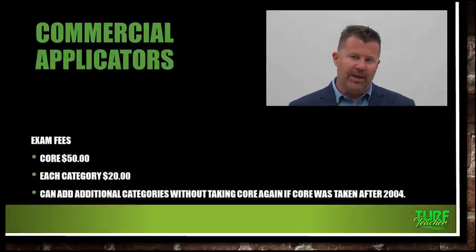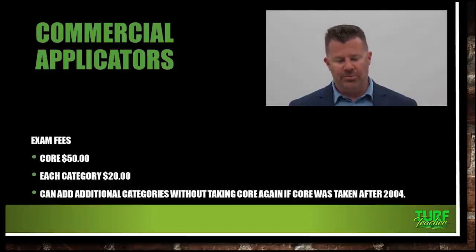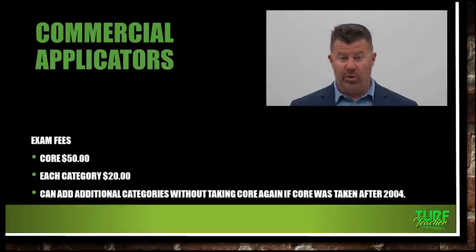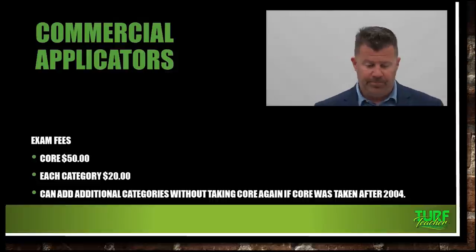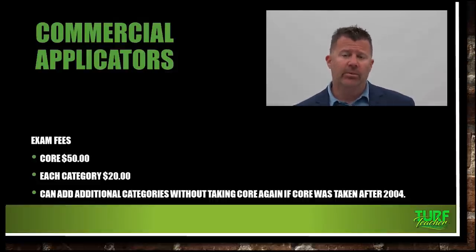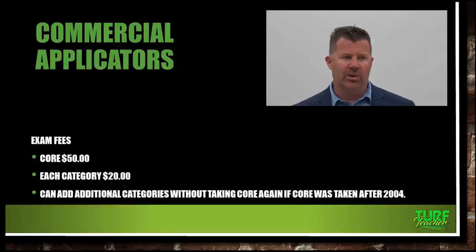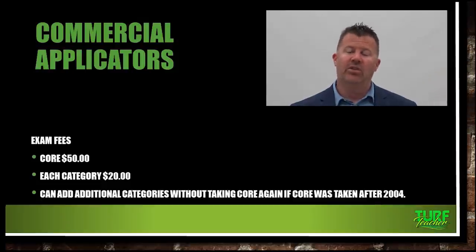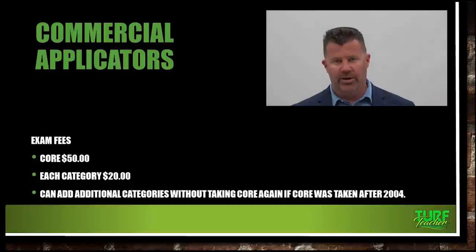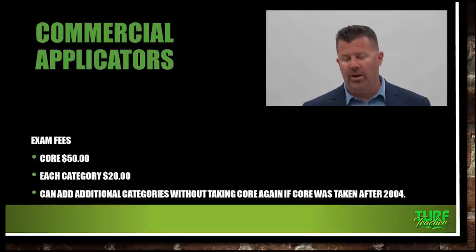Exam fees: you're going to pay $50 for the core and then $20 for each additional specialty. We're going for ornamentals and turf, Category L. I think of it as lawn and landscape — L. Our classification is L, so we will see the letter L in our license number. License numbers begin with 026, a dash, and then the number they assign to you.